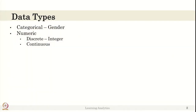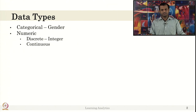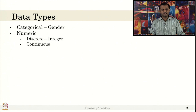Before we jump into what descriptive analytics is, let us look at the data types. There are different data types like categorical, ordinal, and ratio, but let us use only two types here: categorical and numeric. Categorical data has either this or that — this category or that category. For example, if you collect gender information, it is female or male. Or if you collect a response to a survey questionnaire, the response is yes or no — that is categorical data.